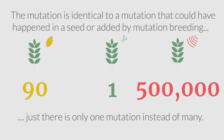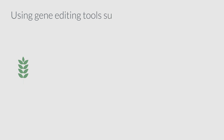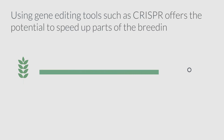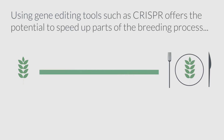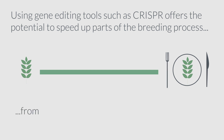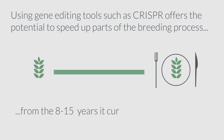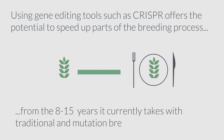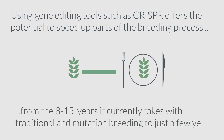Using gene editing tools such as CRISPR offers the potential to speed up parts of the breeding process — from the 8 to 15 years it currently takes with traditional and mutation breeding, to just a few years.